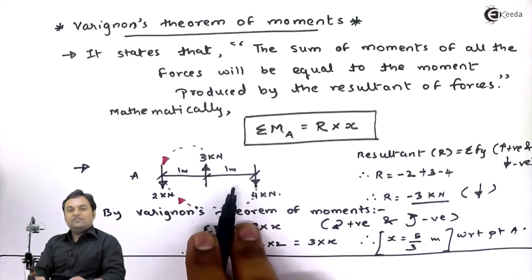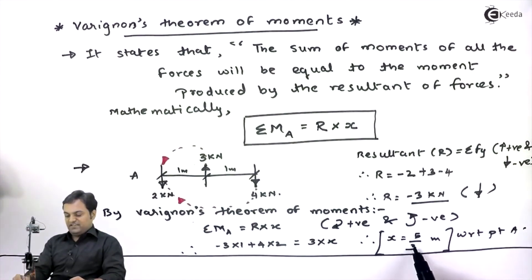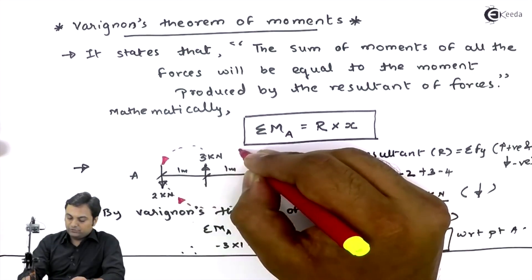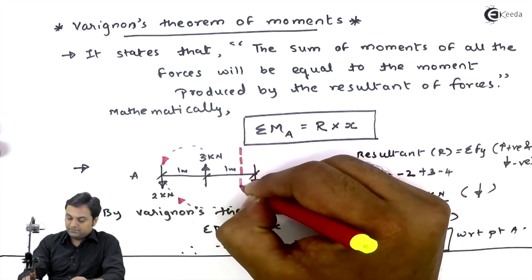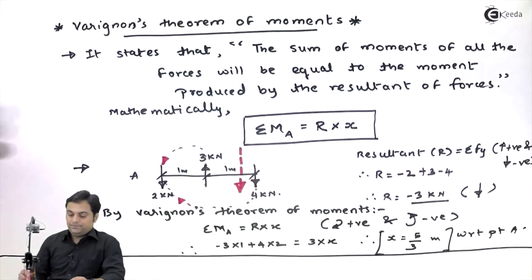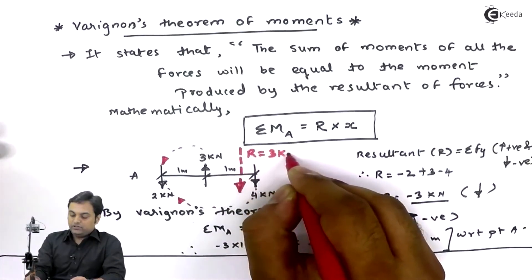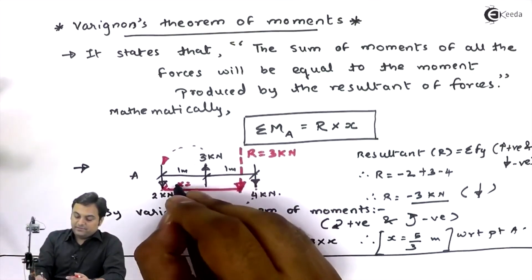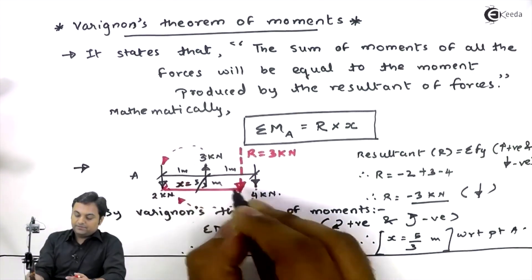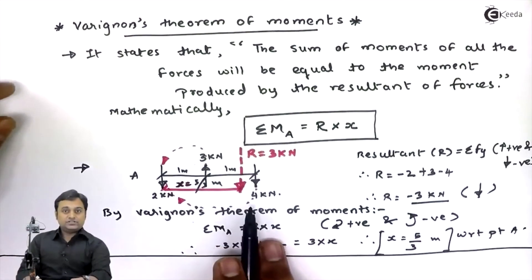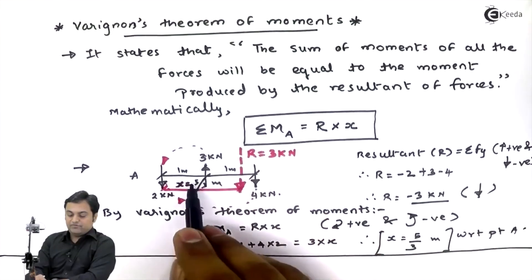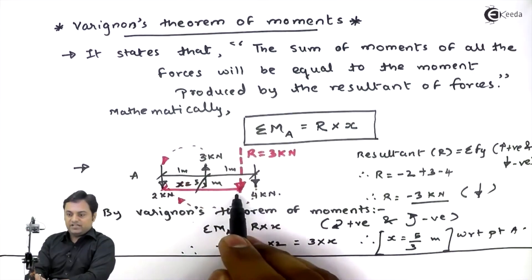Here I have 1 meter and also 1 meter between the forces. Since 5/3 is less than 2, the resultant will be located somewhere in between the 3 kN and 4 kN forces. I can mark the resultant — this red line shows the resultant with a value of 3 kN acting downward, located at a distance X equal to 5/3 meters from point A.